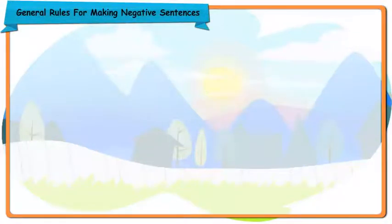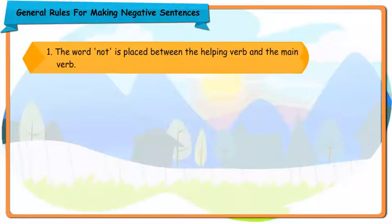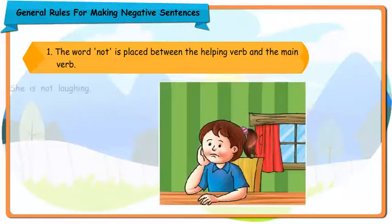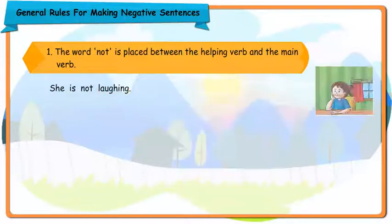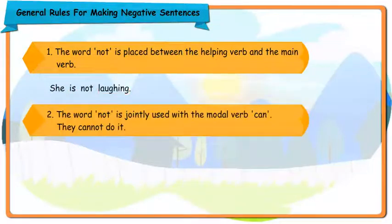General rules for making negative sentences. The word 'not' is placed between the helping verb and the main verb — for example, 'She is not laughing' (helping verb + main verb). The word 'not' is jointly used with the modal verb 'can' — for example, 'They cannot do it'.